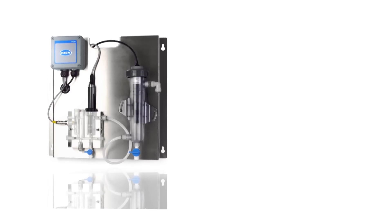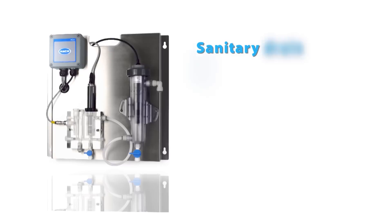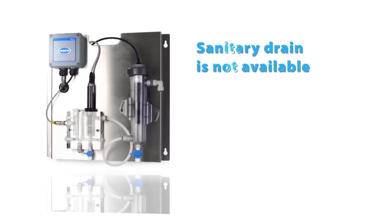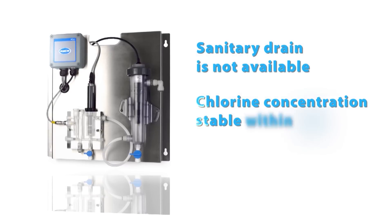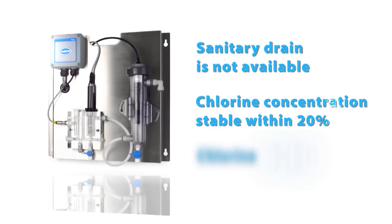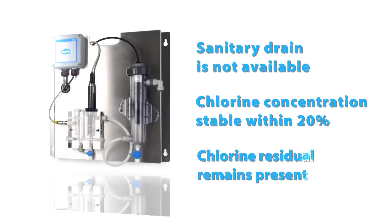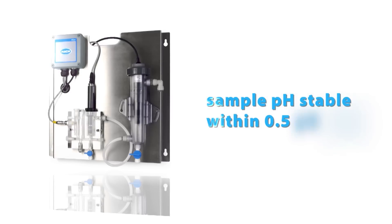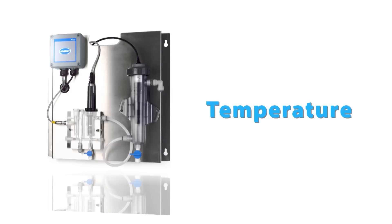The HAWC CL10 is a great choice for applications where a sanitary drain is not available, the chlorine concentration is stable within 20%, and the chlorine residual remains present. The pH also needs to be stable within 0.5 pH units, and flow, pressure, and temperature shouldn't fluctuate outside of the typical seasonal variation.